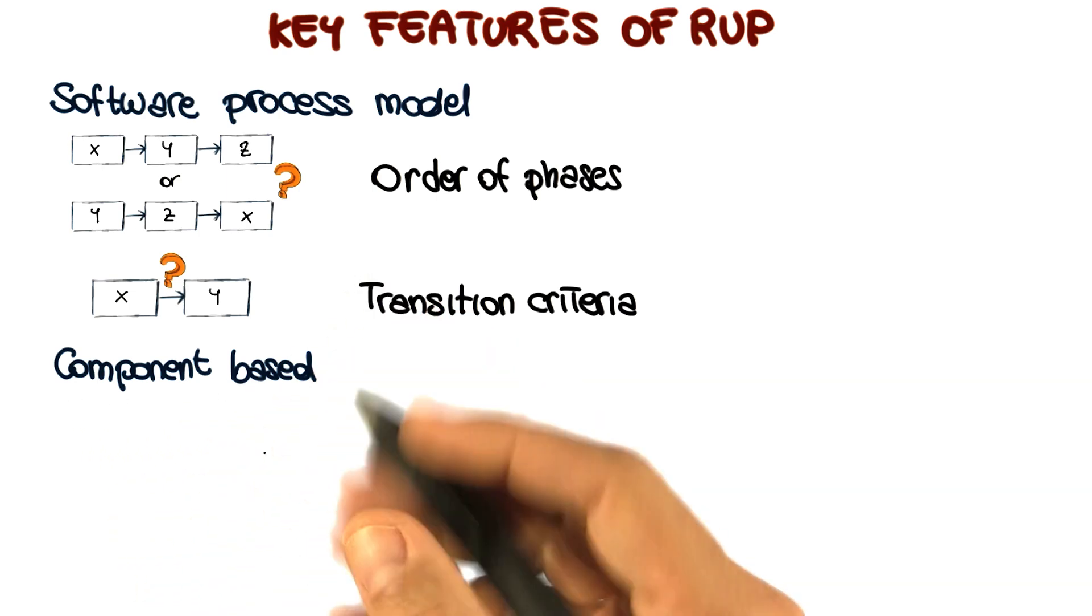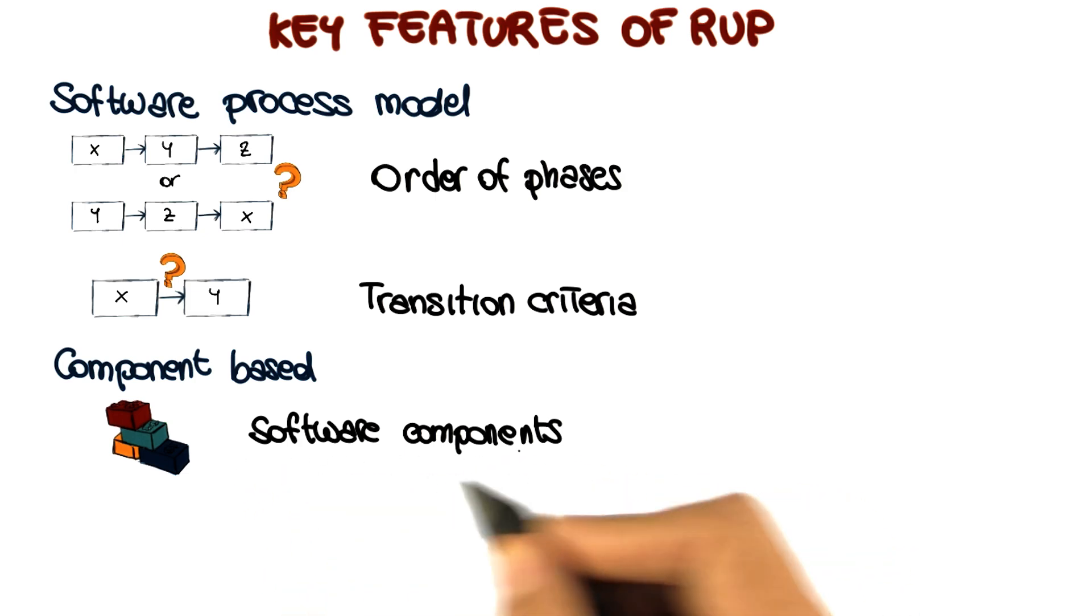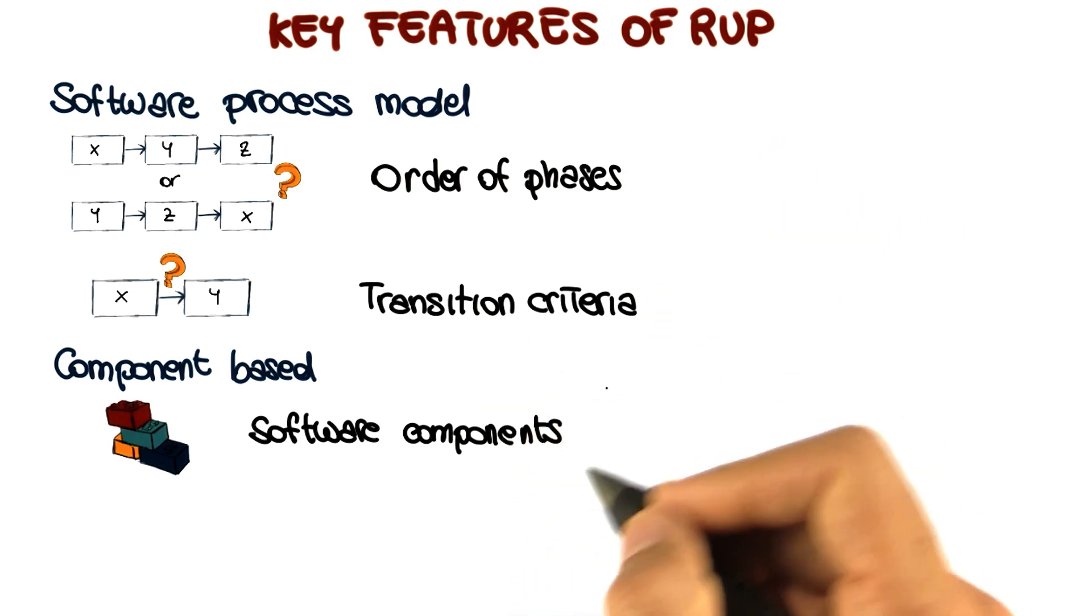And also in this case, this implies two main things. The first one is that a software system is defined and built as a set of software components. So software components are the building blocks of our software system.